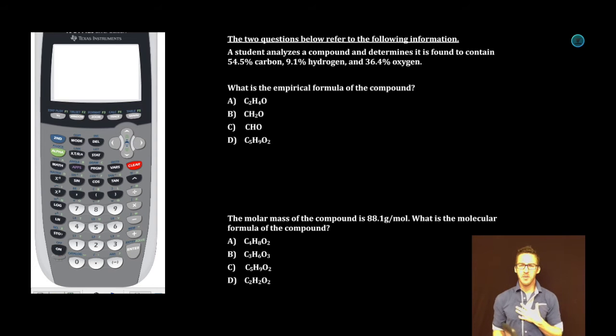Multiple choice, love it so much. I do all the work in my brain where you get to use the calculator between your ears. The two questions below refer to the following information. A student analyzes a compound and determines it is found to contain 54.5% carbon, 9.1% hydrogen, and 36.4% oxygen.